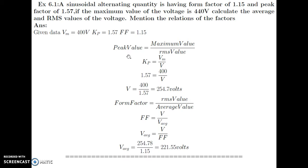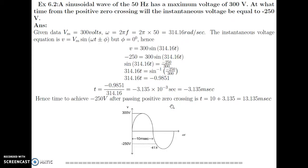To calculate the relationship between peak factor and form factor: peak factor into form factor equals (maximum/RMS) into (RMS/average). The RMS terms cancel, so peak factor multiplied by form factor equals maximum value upon average value.